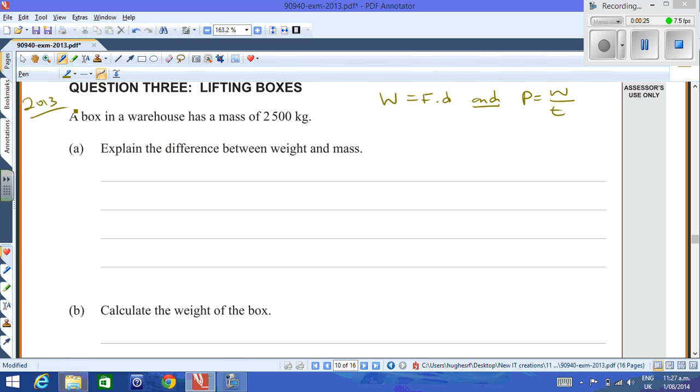The first part of the question is all about a box being lifted in the warehouse and the box has a mass of 2,500 kilograms. So explain the difference between weight and mass. Weight is the force exerted by an object on a surface due to gravity.